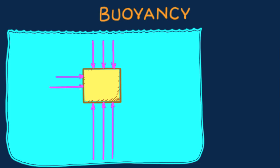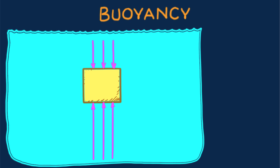The lengths of the vectors at the side of the block are progressively longer with greater depth. Notice that the vectors at the sides of the block are equal and opposite in direction, so they cancel. I'm representing the force along the top with a single vector, then along the bottom. This pair of vertical vectors is due to the difference in water pressure against the block's bottom and top surfaces.